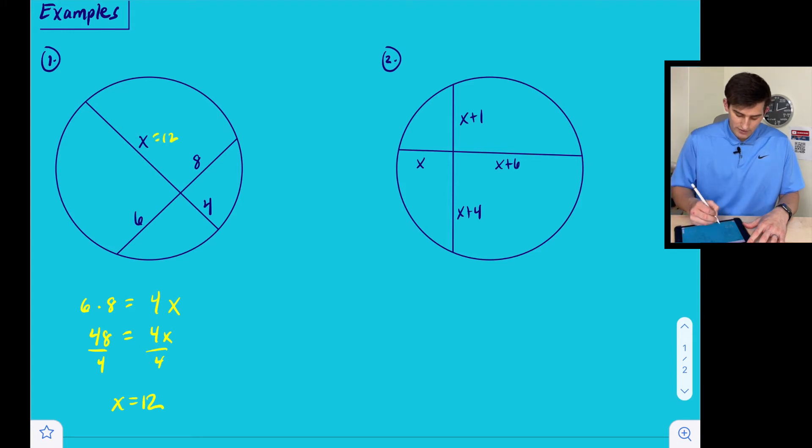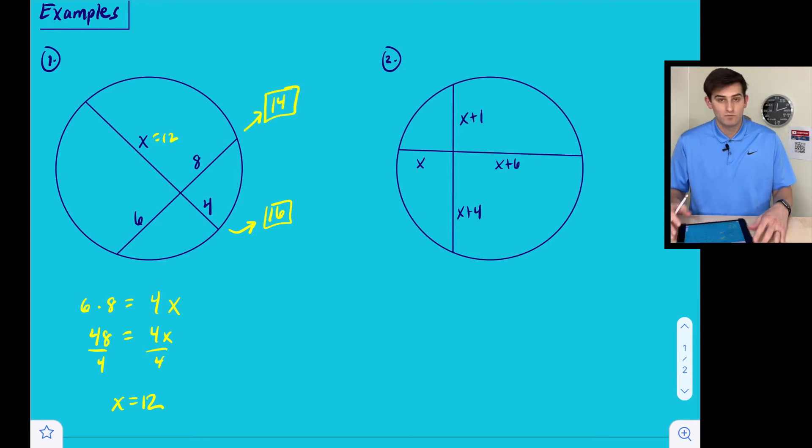So now we know that X is equal to 12. So if this is 12, then we know this chord right here would be 16, and we know this chord right here is 14.